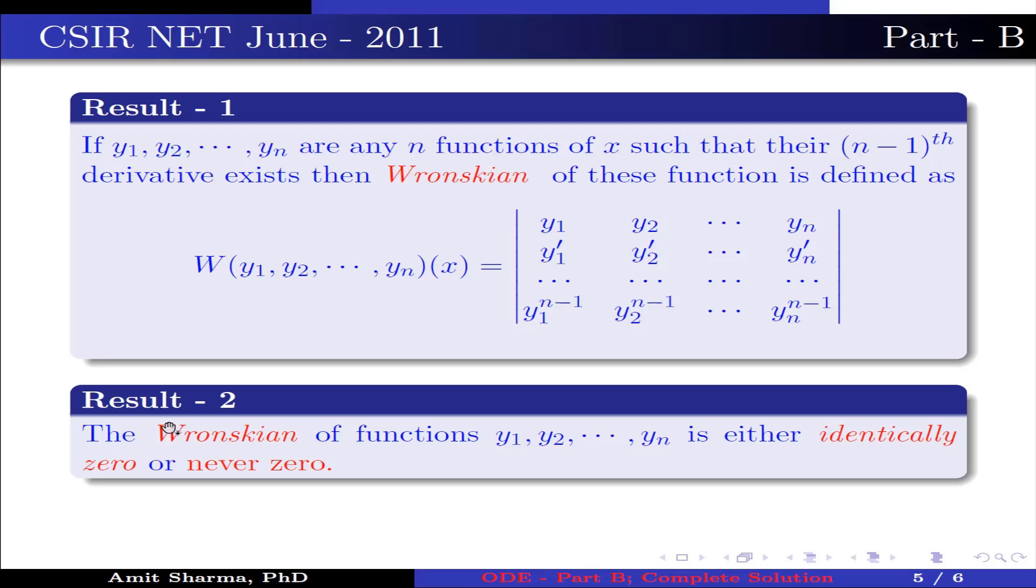Result number 2: the Wronskian of functions y1, y2, ..., yn is either identically 0 or never 0.